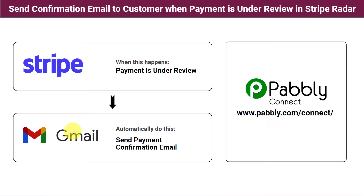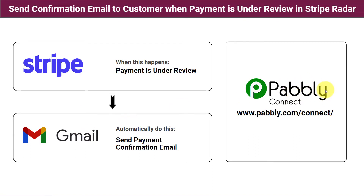What if I tell you that you can completely automate this email sending process? Whenever the payment is under review in Stripe, you do not have to manually send the email and ask them for verifying the payments. The emails will be sent automatically for every high risk or elevated risk payment. We will just have to integrate Stripe and Gmail using an integration and automation software — Pabbly Connect — and the process of verifying the payment by sending emails manually will be automated completely.